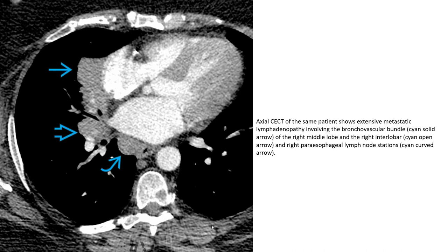Axial CT: extensive metastatic lymphadenopathy involving the bronchovascular bundle, seen with solid arrow indicated. After right middle-lobe and right anterobasal atelectasis, seen with open arrow indicated, and right paraseptal changes with solid arrow indicated.